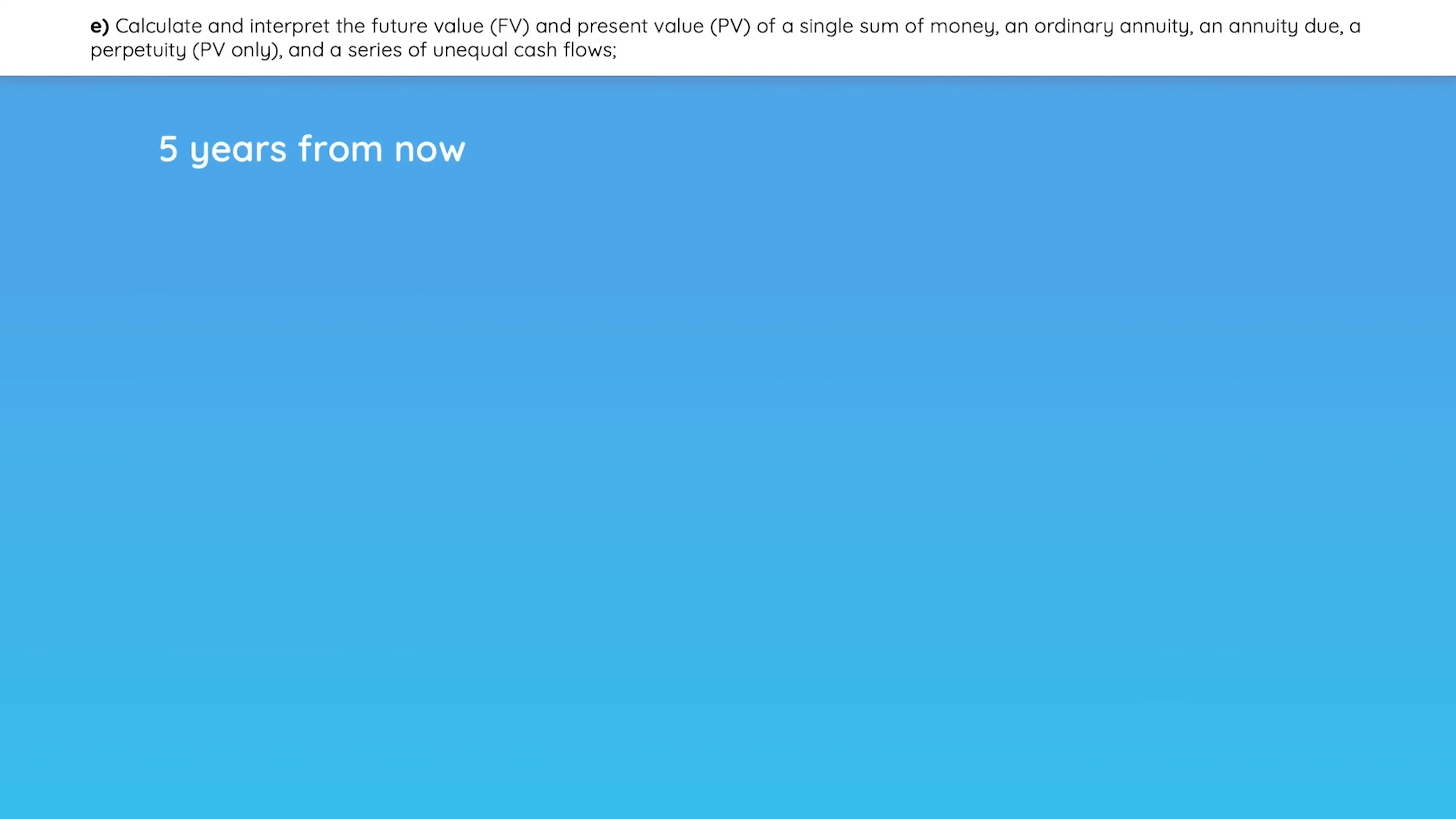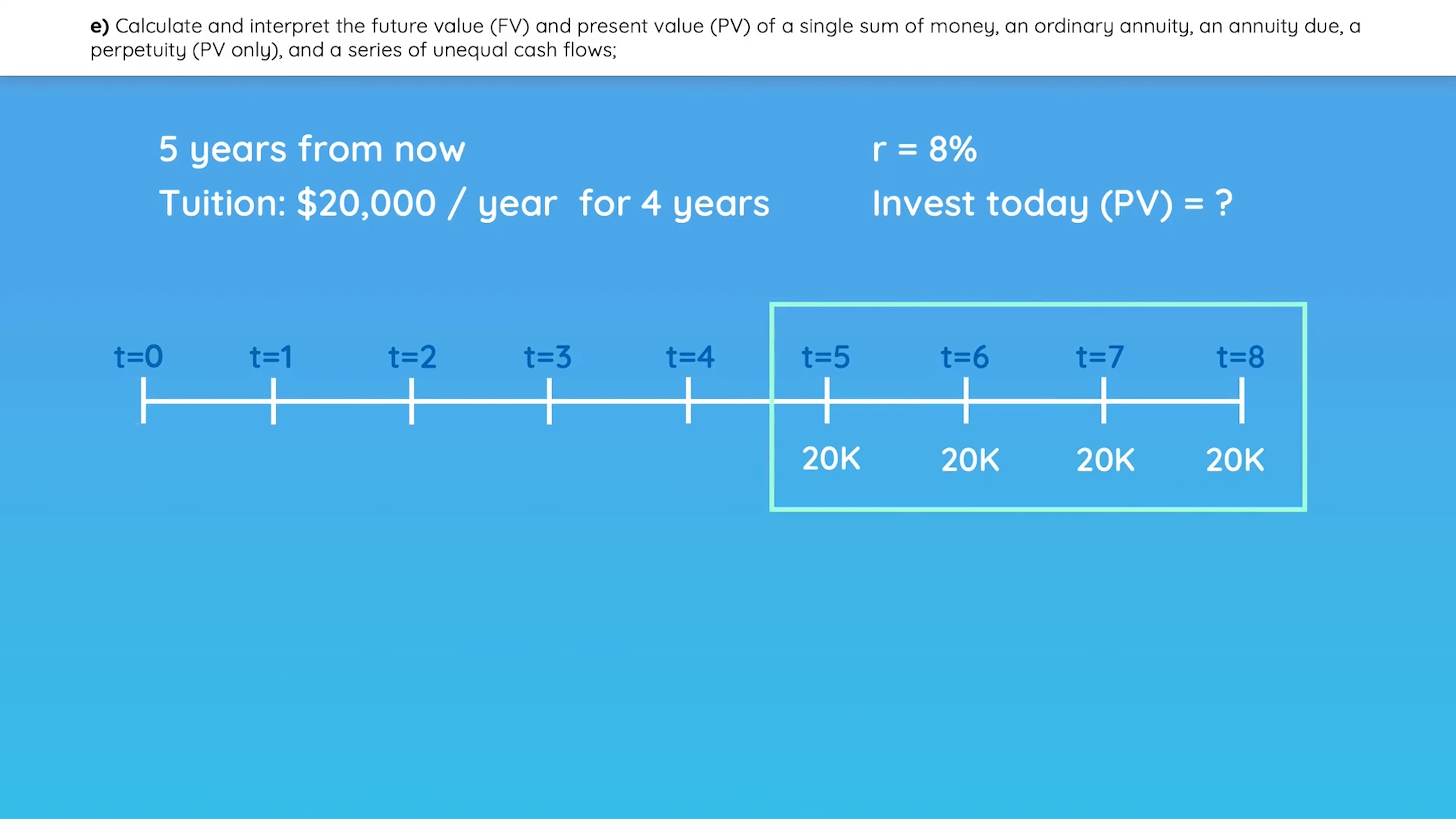Suppose that five years from now, your child will be going to college. You will have to pay $20,000 per year for four years. The interest rate on investments is 8% annually, so how much would you have to invest today to have enough money to send your child off to college? Before anything else, draw a timeline. Notice that here we have an annuity. It is an equal stream of cash flows of $20,000 for four years.